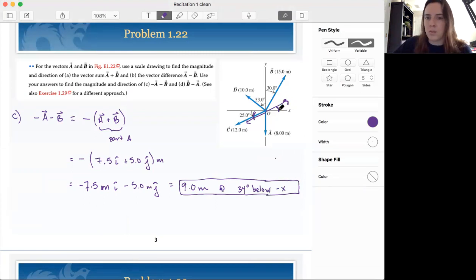Or you could take your positive 34 plus 180. So that's going to be 214 from the positive x-axis.